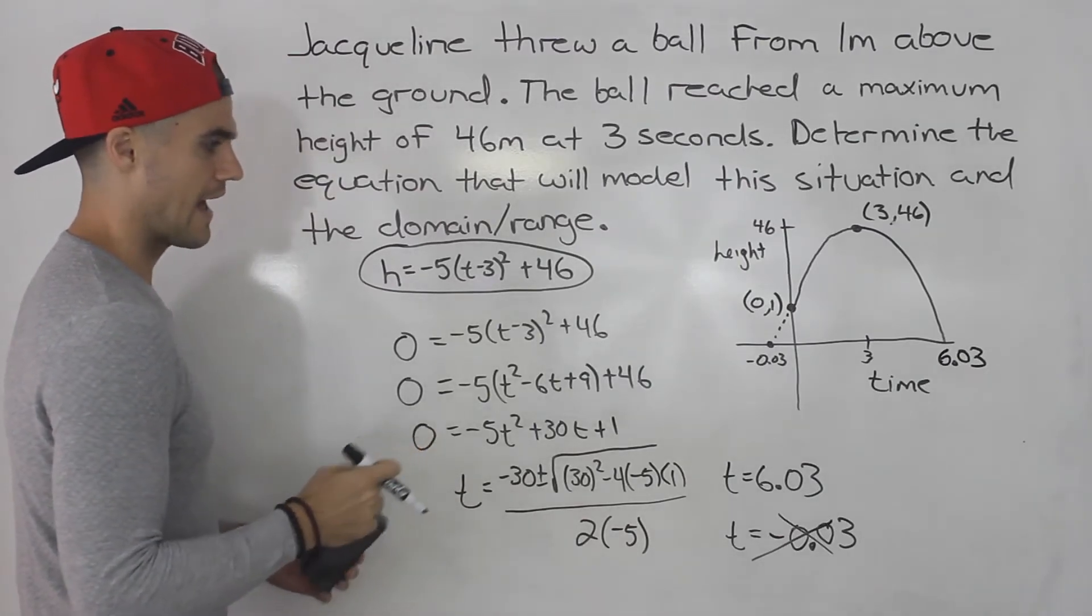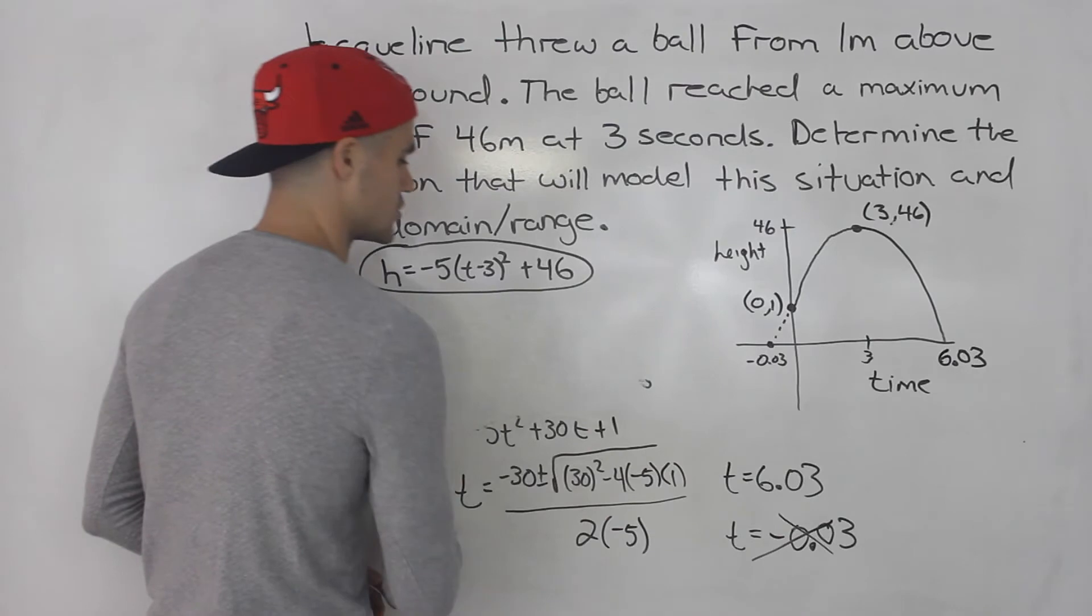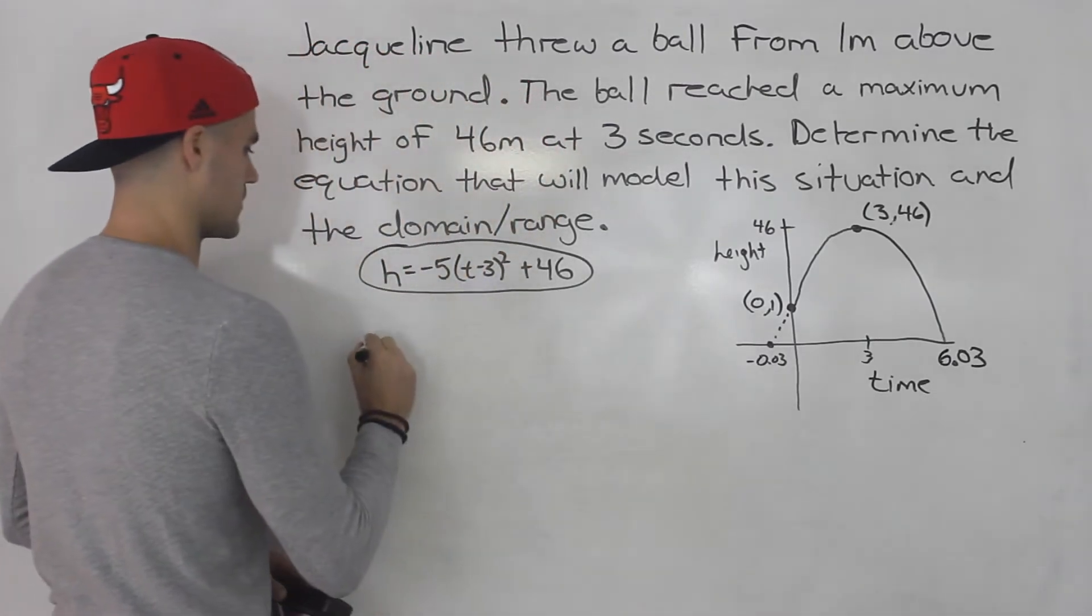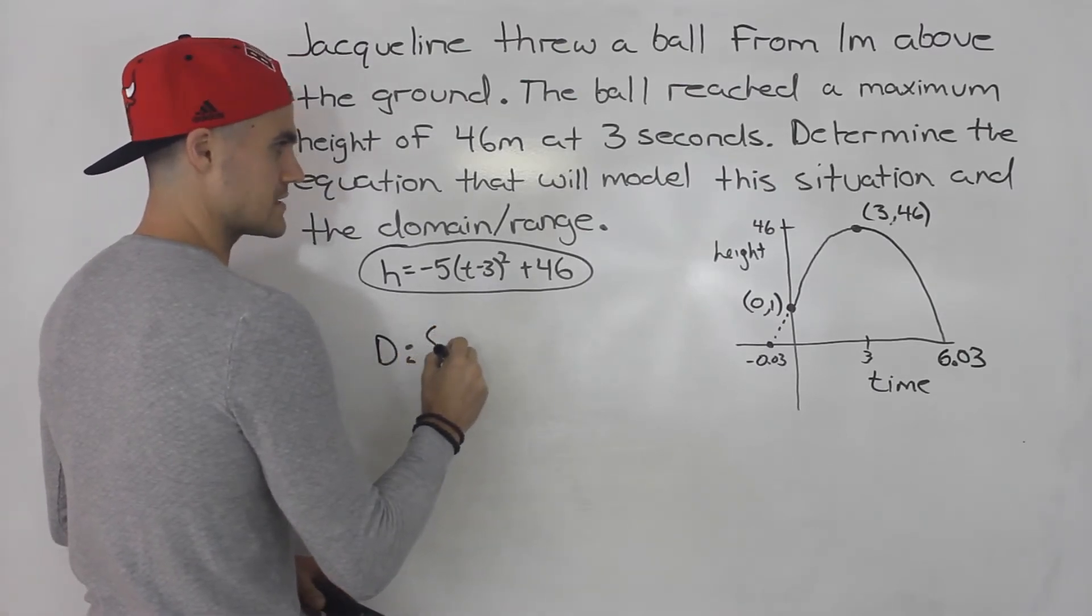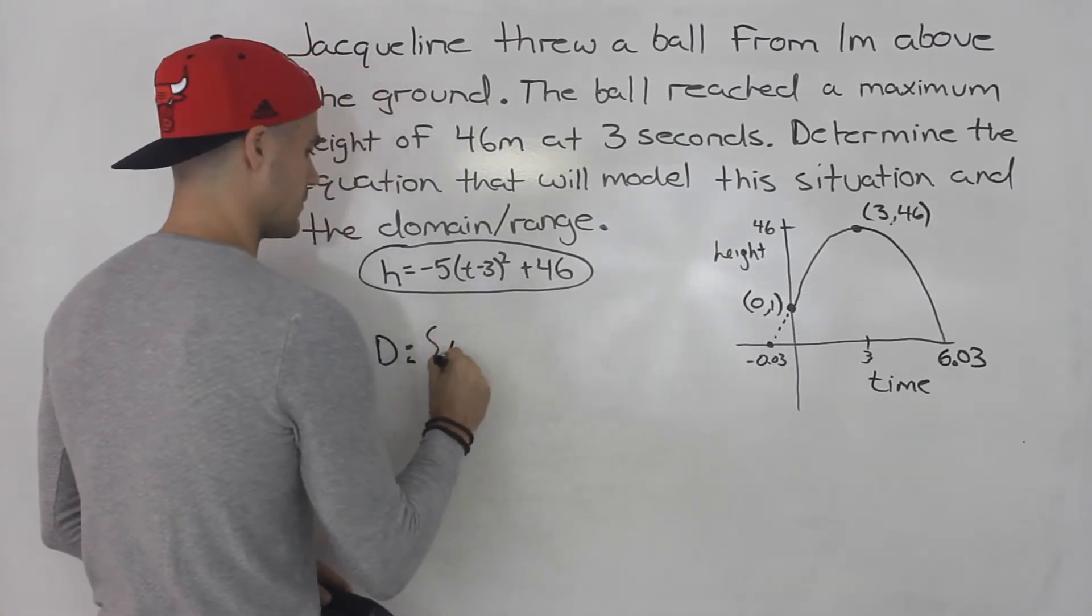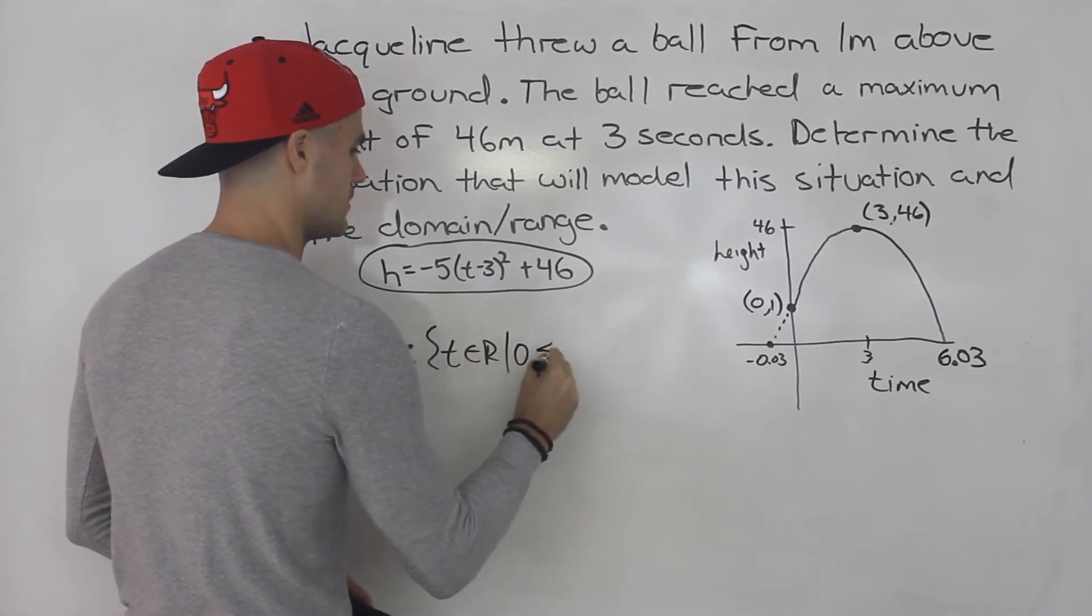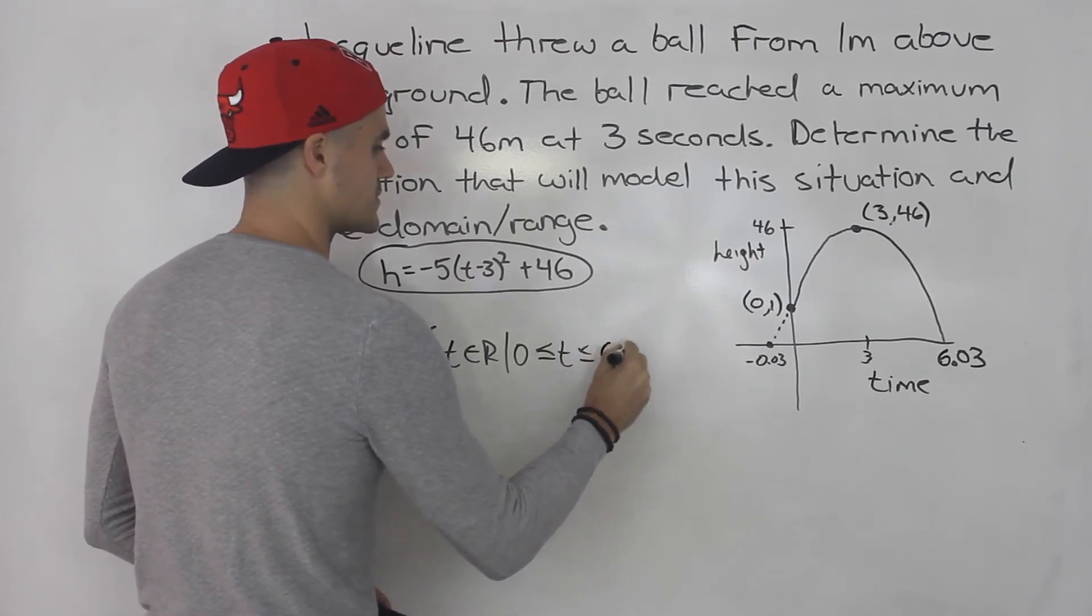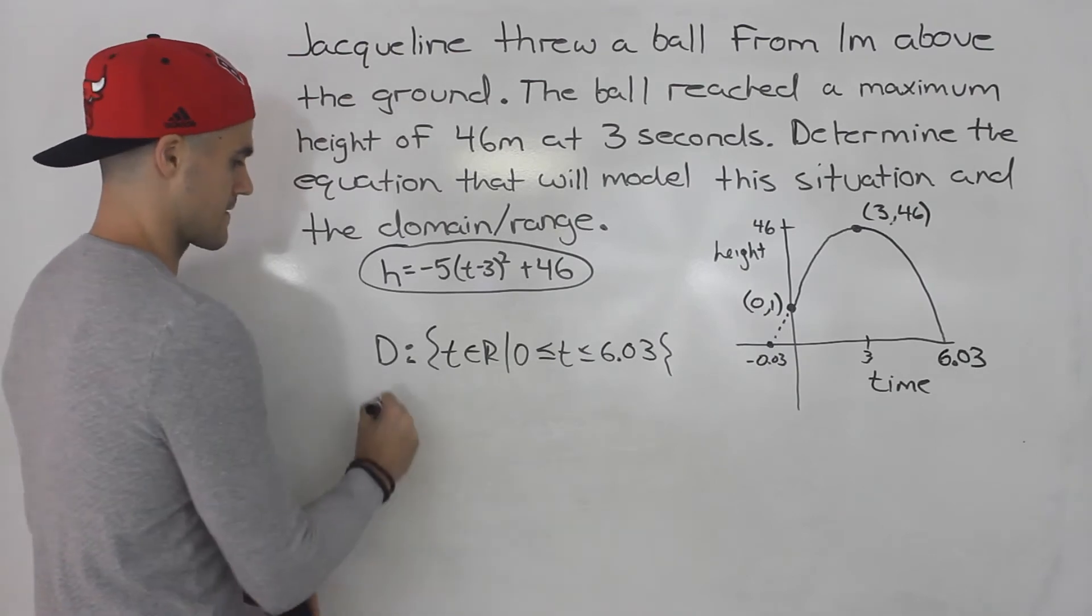And now we have enough information to get the domain and the range. So domain is going to be what? Well the domain is the independent variable which is time. So time can be anything. However, time has to be in between 0 and 6.03 seconds when the ball hits the ground.